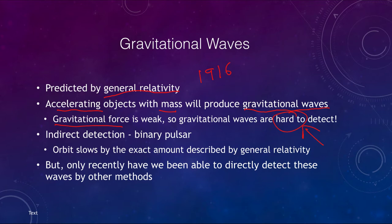Gravitational waves are analogous to electromagnetic waves. Electromagnetic waves are caused by accelerating charged particles and are related to the electromagnetic force, which is much stronger. That's why we can see electromagnetic waves from accelerating charged particles — what we see as visible light, X-rays, or radio waves — much more easily than gravitational waves.